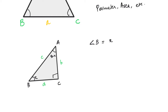This is triangle A, B, C. With respect to angle B: small b is angle B's opposite side. Then we have the opposite side. Side c, relative to angle B, is the hypotenuse. Side a, relative to angle B, is the adjacent side.